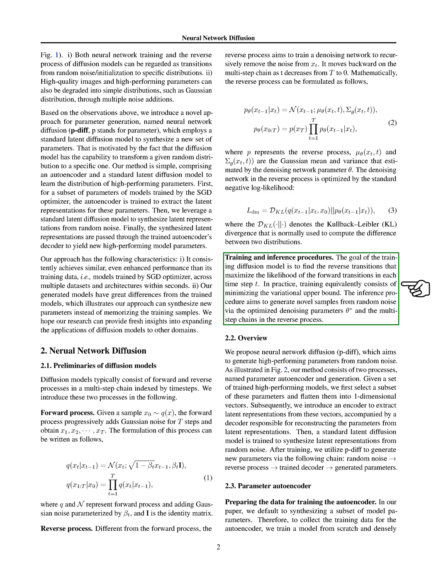During inference, the aim is to generate novel samples from random noise using the optimized denoising parameters and the multi-step chains in the reverse process. In summary, our proposed Neural Network Diffusion, P-DIF, aims to generate high-performing parameters from random noise.